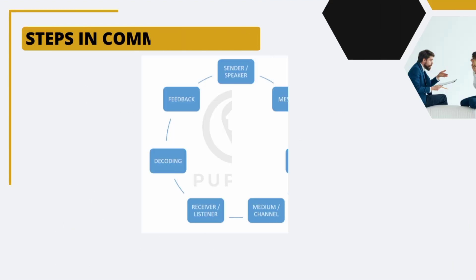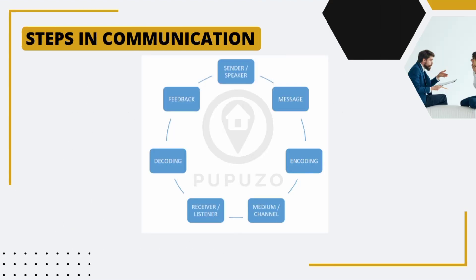Now, let's explore the steps involved in the communication process. It begins with a sender or speaker who formulates a message. This message is then encoded, which means converting it into a format suitable for transmission.